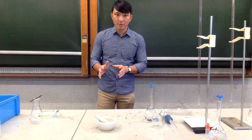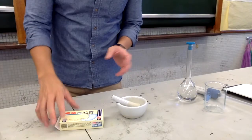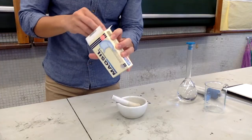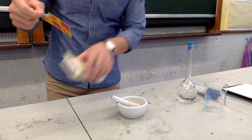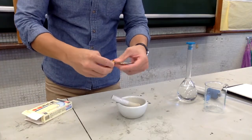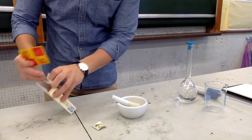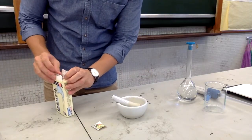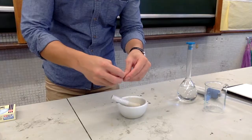First of all, we are going to take one antacid tablet and we will grind it into powder using mortar and pestle.